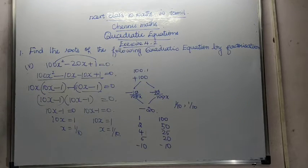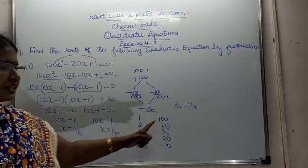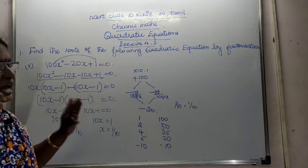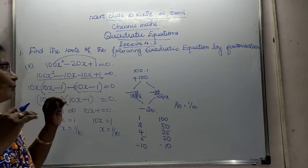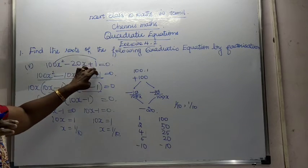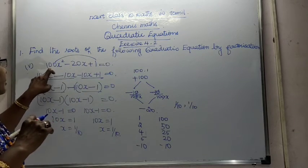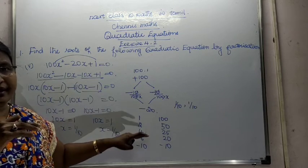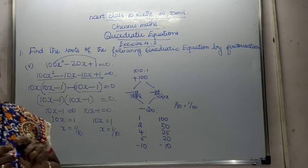Therefore, the answer is x equal to 1 by 10. This answer is the answer. Therefore, my answer is correct. Understood? Then you can multiply this number and that number, you can see and verify. Okay dear, thank you.